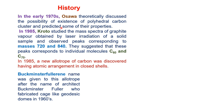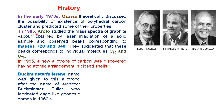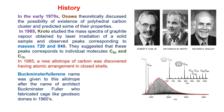But all these were discussed theoretically. So in 1985, Kuroto and his co-workers studied the mass spectrum of graphite vapors that were obtained by laser irradiation on a solid sample, and they observed peaks at 720 and 840. They suggested that these peaks are due to C60 and C70, which are new allotropes of carbon.